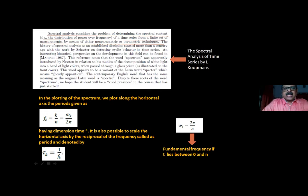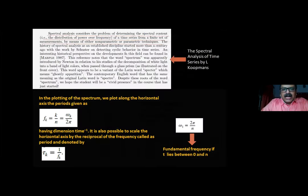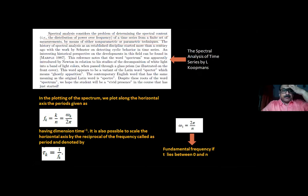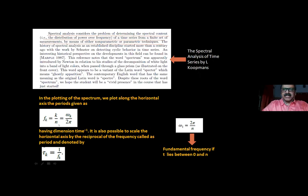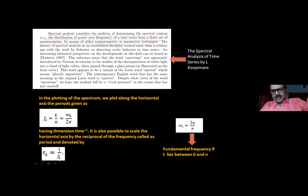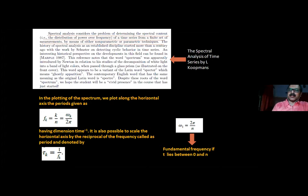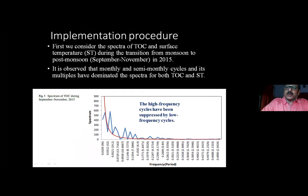This is a pictorial depiction of how a given time series is converted to a sum of sine and cosine curves in the frequency domain, taken from a fundamental book on spectral analysis. When plotting the spectrum, we plot spectral density against a horizontal axis of frequencies fₖ = k/n = ωₖ/2π, with dimension of time⁻¹. It is also possible to scale the horizontal axis by the reciprocal of frequency, called the period, denoted τₖ = 1/fₖ. The fundamental frequency is ω₁ = 2π/n.